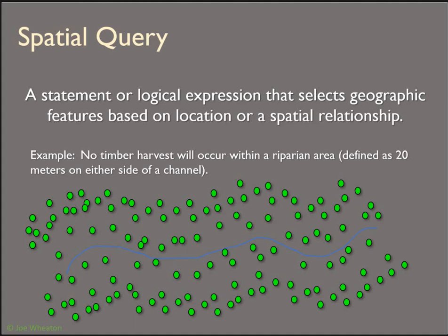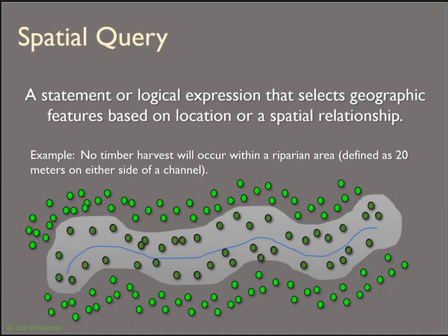A spatial query is different — spatial queries deal with geometry, where things are, and the proximity of things to other things. For example, if we're working with a riparian area, we might want to select all timber within 20 meters on either side of a channel. We have a channel polyline and a point dataset with tree locations. We could run a buffer and then clip or intersect, or we could just say: select all timber point features that are within 20 meters of the channel polyline using select by location.